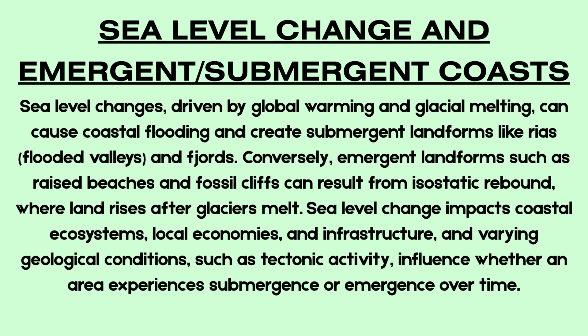Sea Level Change and Submergent and Emergent Landforms. Changes in sea level influence coastal landscapes in significant ways. Eustatic sea level change refers to global changes in sea level, often caused by melting ice sheets or thermal expansion of seawater as a result of rising temperatures. Isostatic change occurs when land rises or sinks relative to the sea due to tectonic activity, glacial loading or post-glacial rebound. Emergent landforms are created when land rises relative to sea level. Raised beaches and fossil cliffs, found in western Scotland, are evidence of past sea levels and indicate where the coastline once was before isostatic uplift following the last ice age.